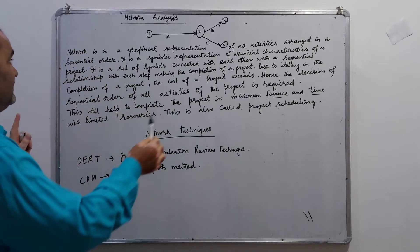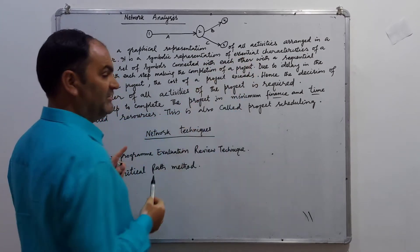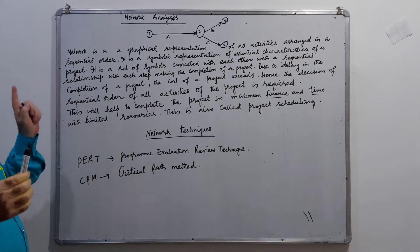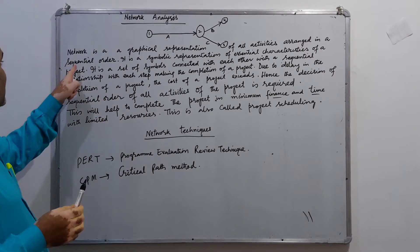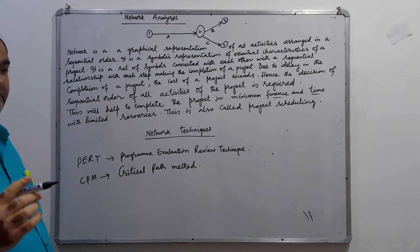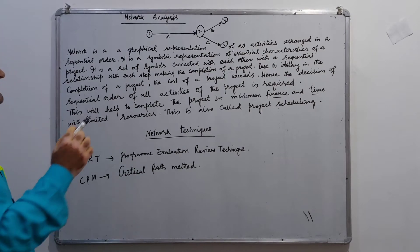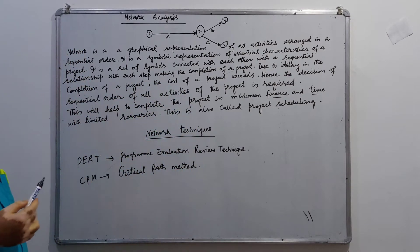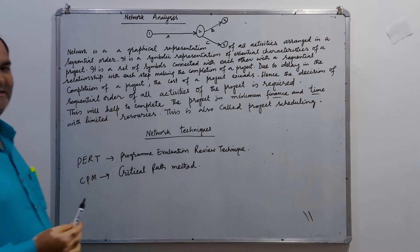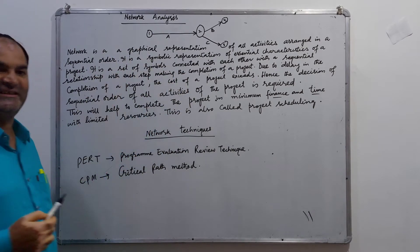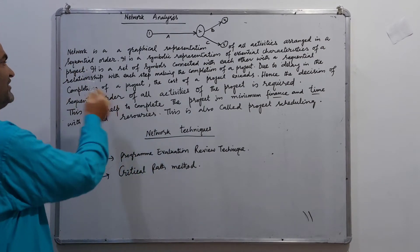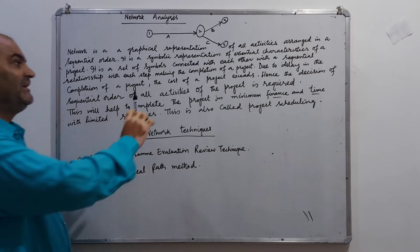Network analysis revolves around activities. Activities are arranged in order — in a systematic manner, in sequential order. A network is a symbolic representation of the essential characteristics of the project. It is a set of symbols connected with each other in a sequential relationship, with each step making a completion of a project.